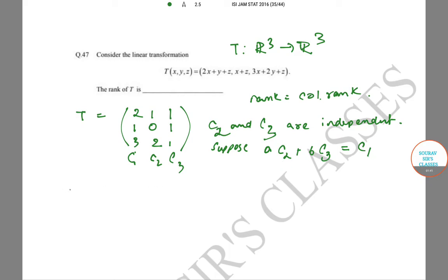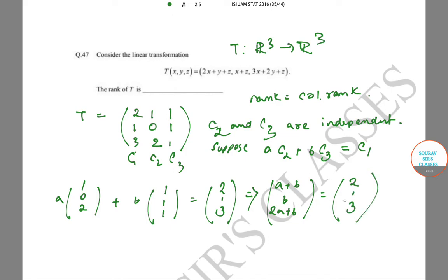Which implies [a+b, b, 2a+b] is equal to [2,1,3]. Since b is equal to 1, a is equal to 1.